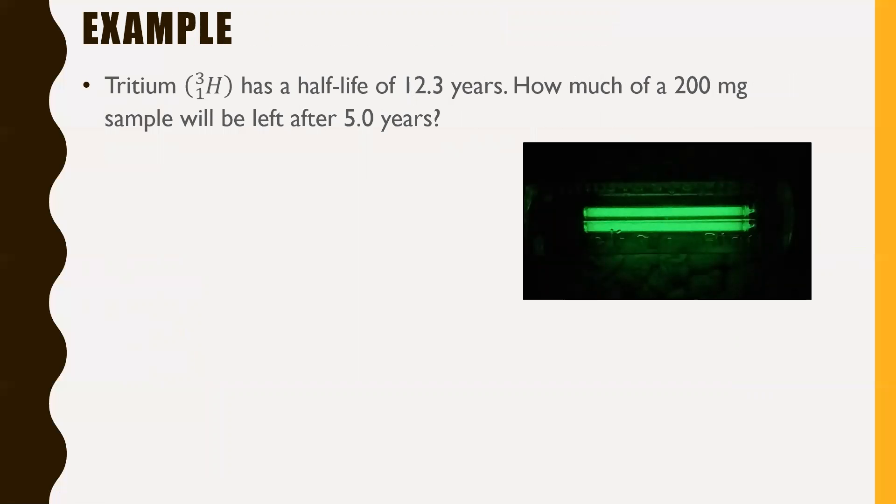Let's do some examples here. Tritium, which I know we've talked about before, it's just an isotope of hydrogen. It glows, so they use it in like watches and stuff. It has a half-life of about 12.3 years. How much of a 200 milligram sample will be left after 5.0 years? So 5.0 years, this is your elapsed time. 12.3 years, that's your half-life.